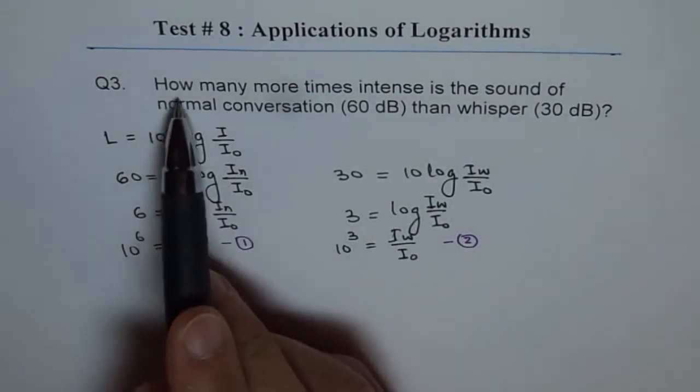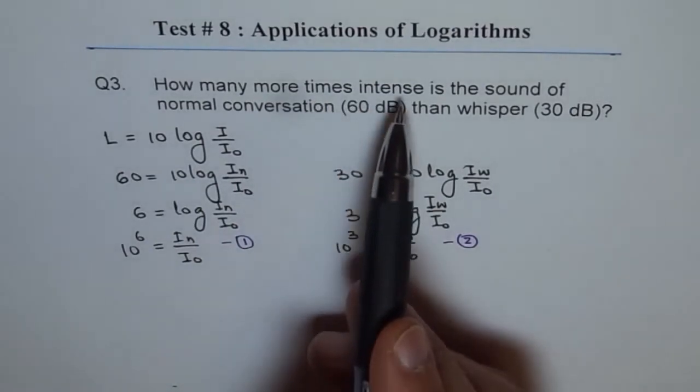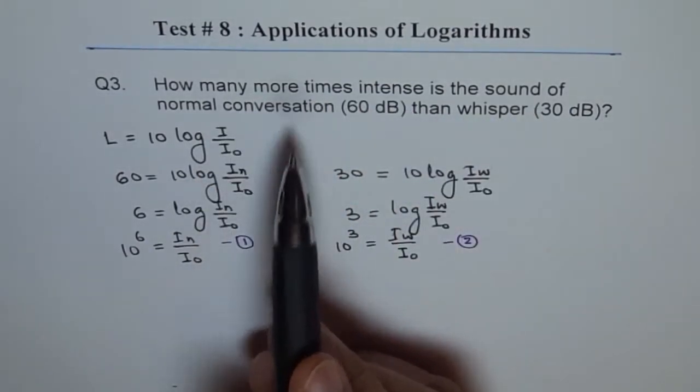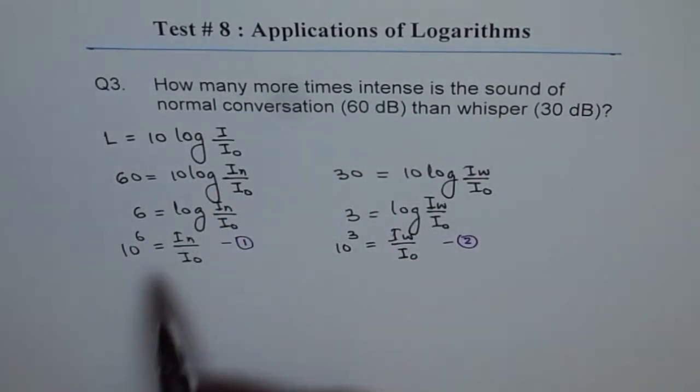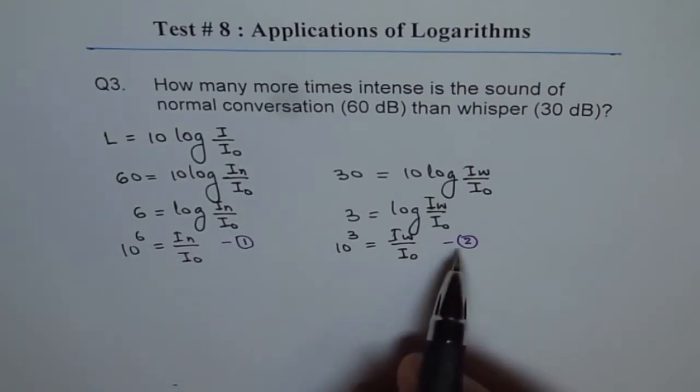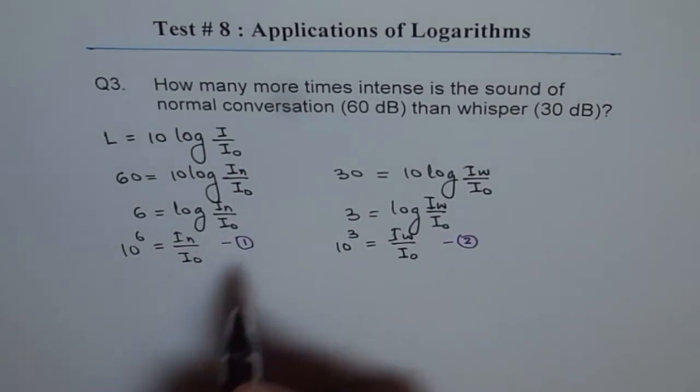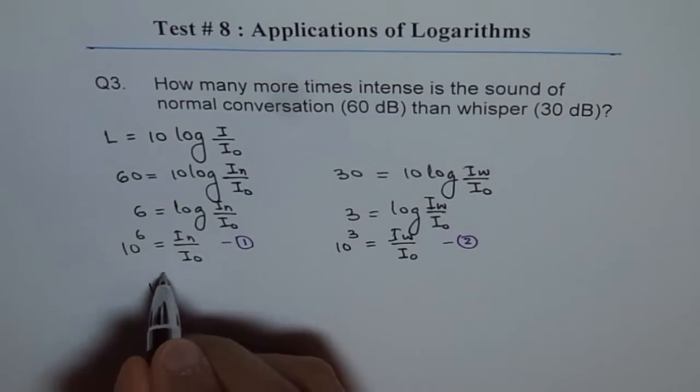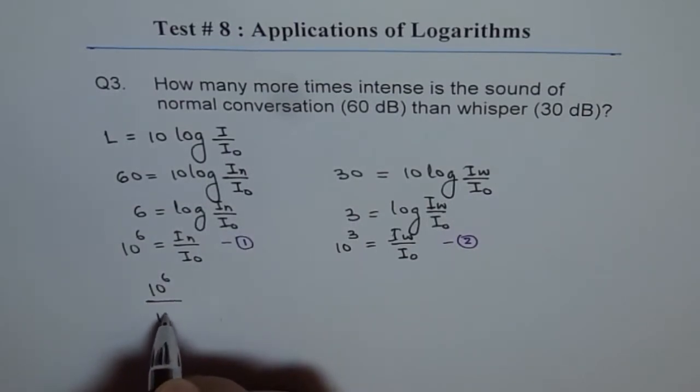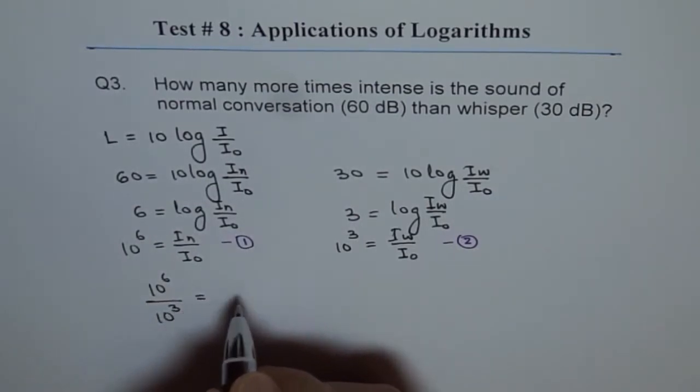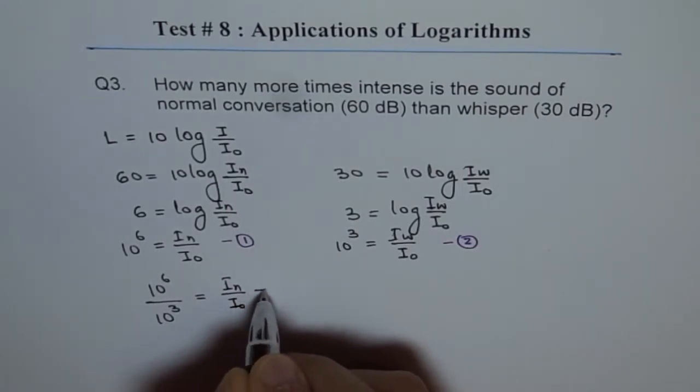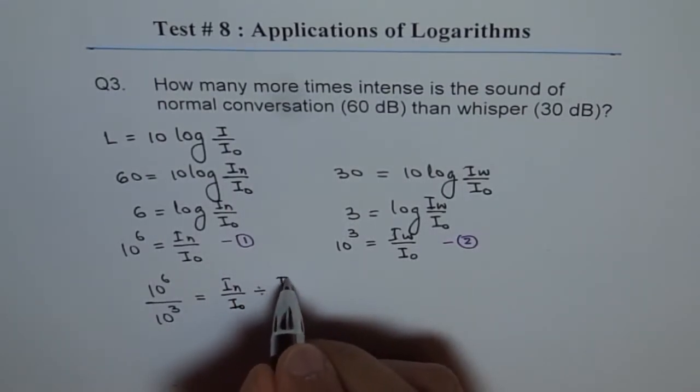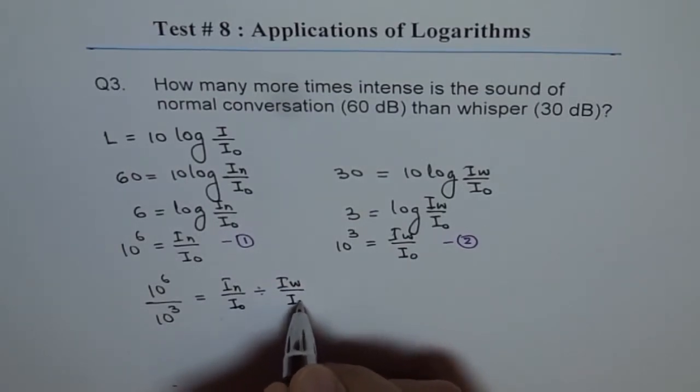Now, the question is how many more times intense is the sound of normal conversation, that means this IN. So let us divide 1 by 2. If I divide 1 by 2, then I get 10 to the power of 6 divided by 10 to the power of 3 equals I normal over I0 divided by IW over I0.